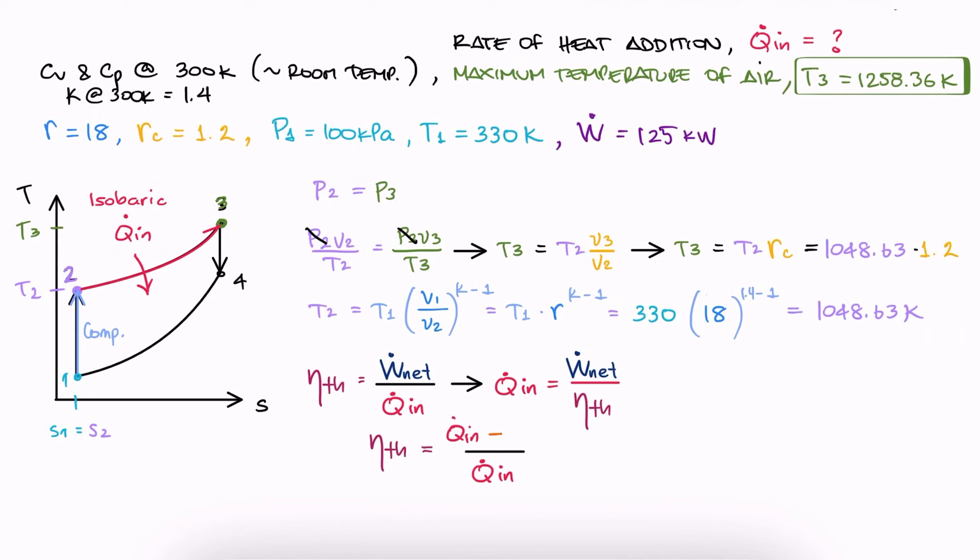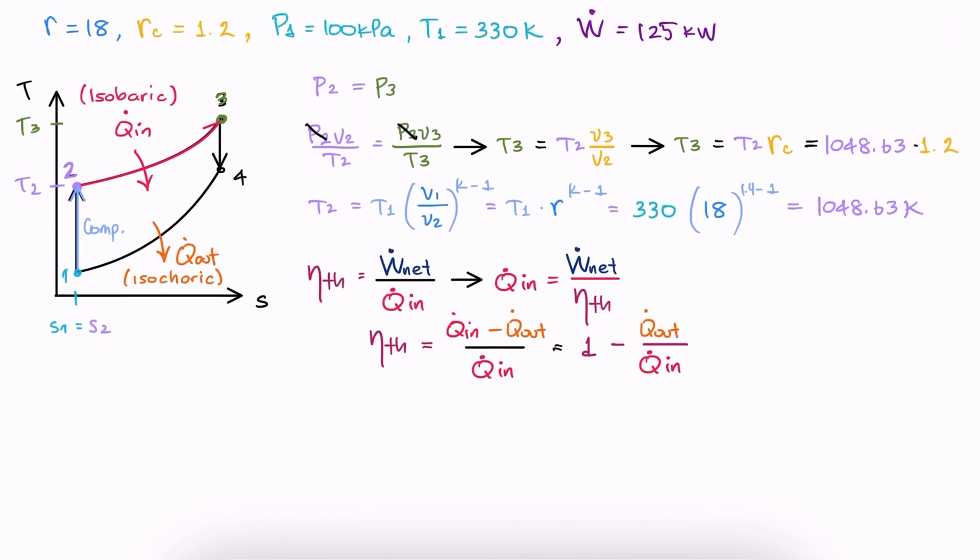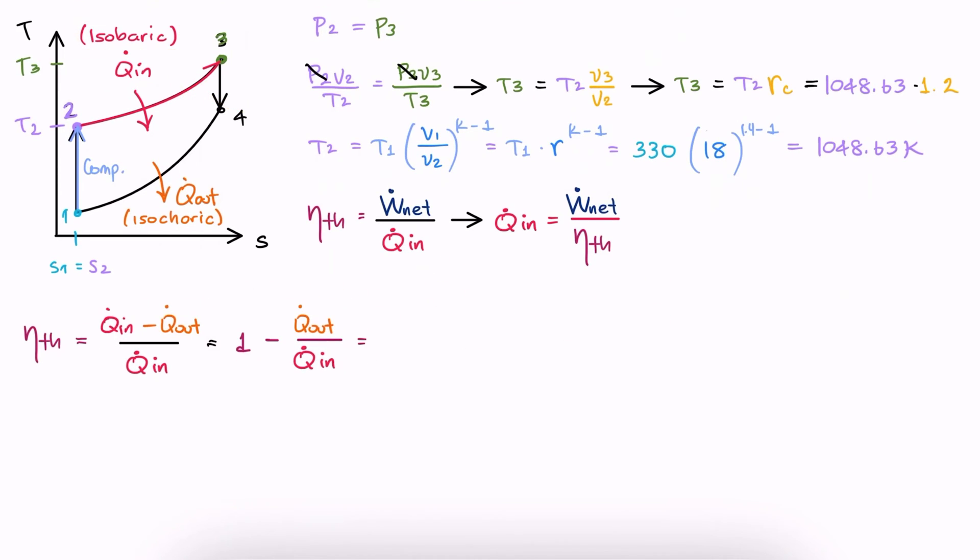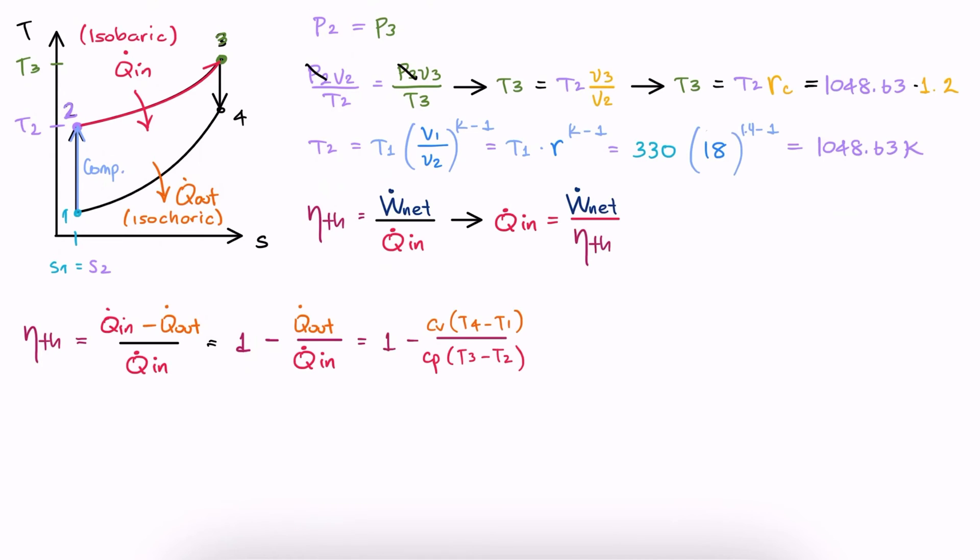If efficiency can also be written as 1 minus the Q ratio, and the heat out happens at a constant volume, like we saw during the main lecture, and the heat in happens at a constant pressure, we're using Cv and Cp here, respectively. Let's now replace Cp over Cv as K, the specific heat ratio, and also take out T1 from the numerator and T2 from the denominator.